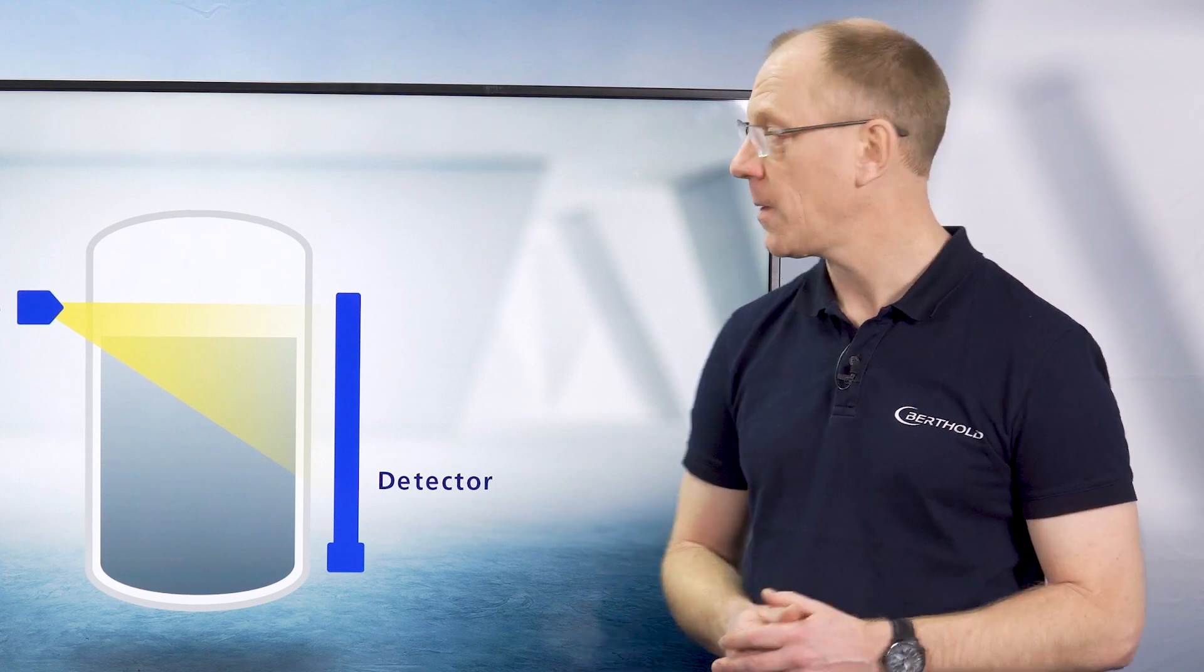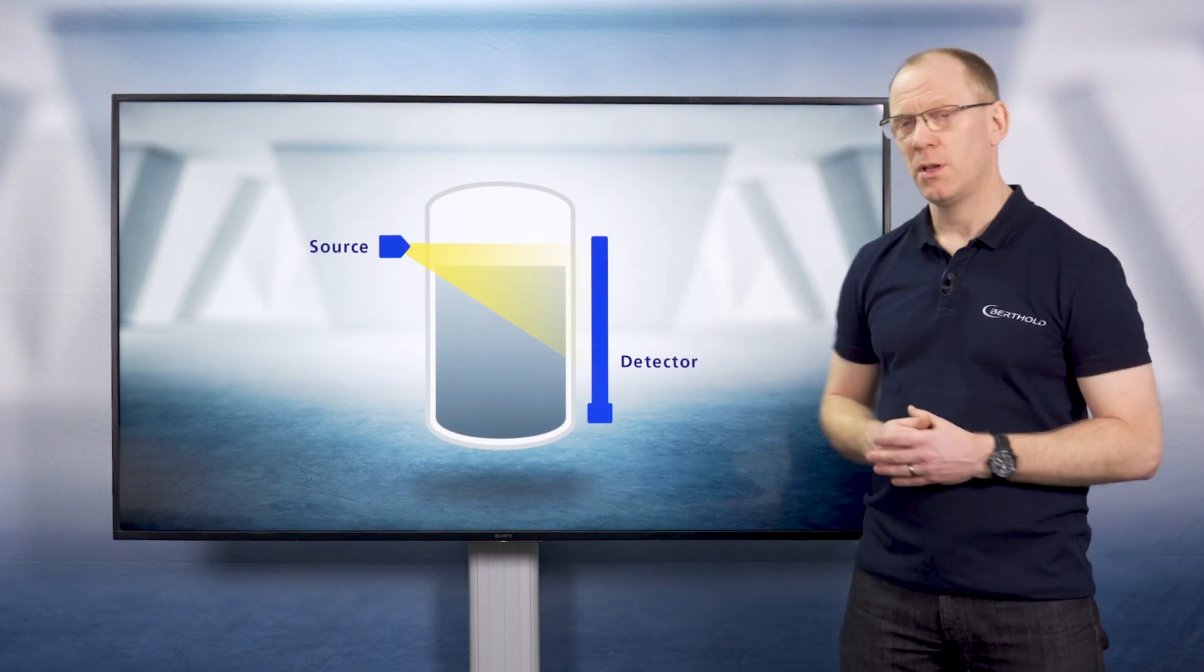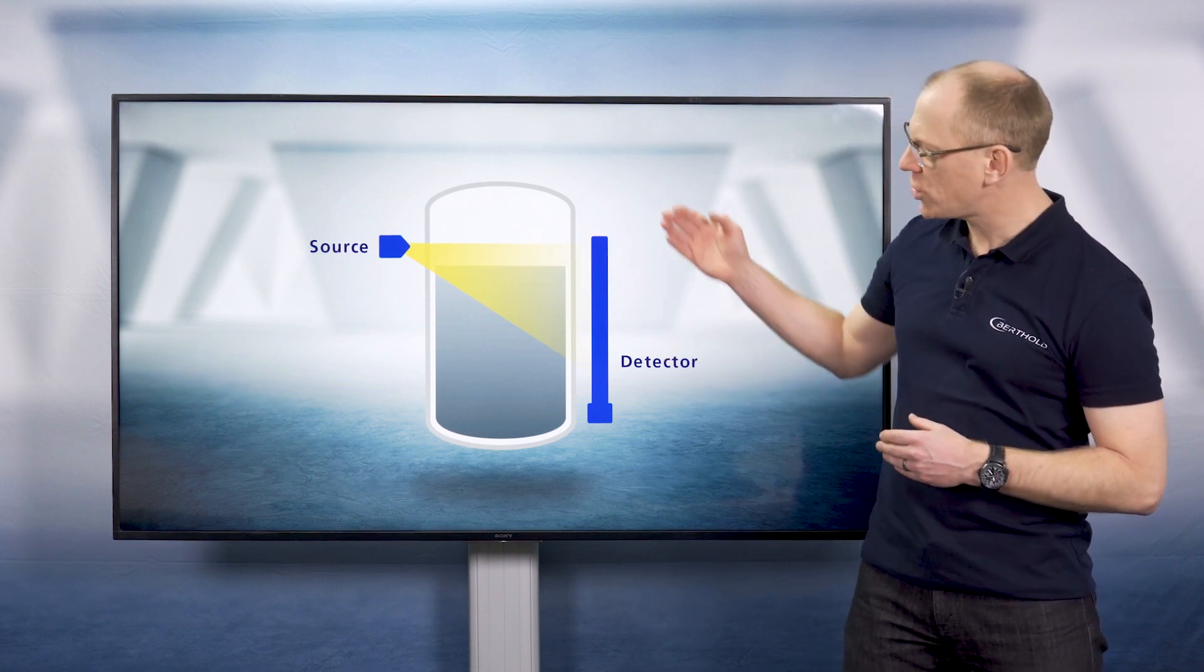But a radiometric measurement approach is going to handle the worst conditions you can ever think of. For such an approach, there is a source and a detector, and they are mounted outside the vessel.